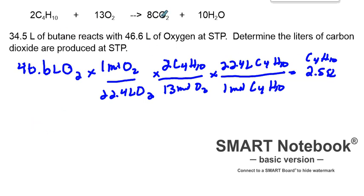So to find our carbon dioxide produced, I will be using the limiter. 46.6 liters of oxygen times that by one mole of oxygen over 22.4 liters of oxygen.